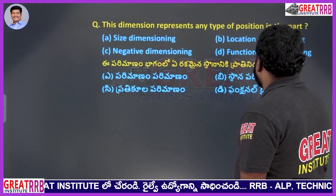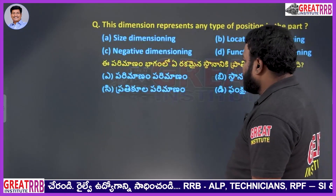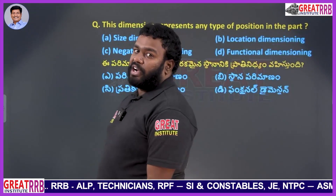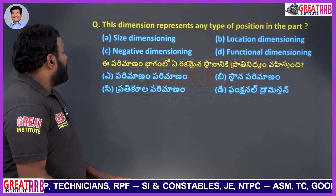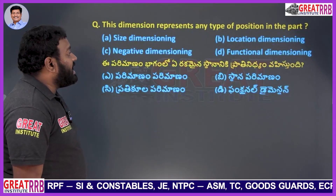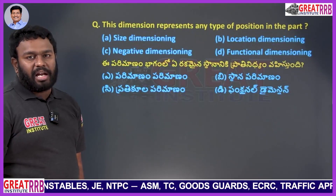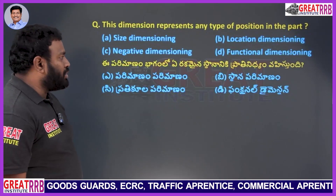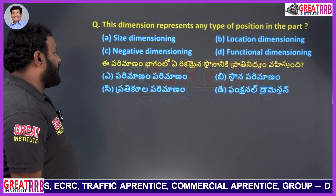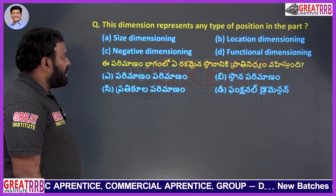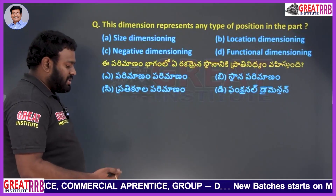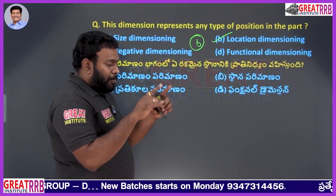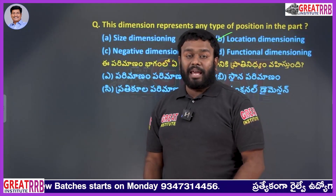This dimension represents any type of positions in the part: A size dimensions, B location dimensions, C negative dimensions, D functioning dimensions. Size dimensions cannot show positions. The dimension that represents any type of position in a part is called location dimensioning. Option B, location dimensions, will be the right answer.